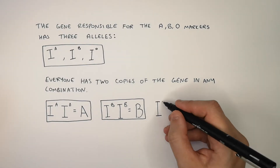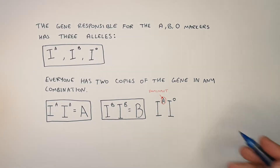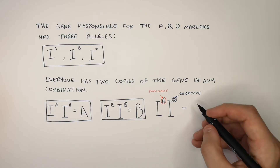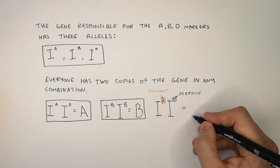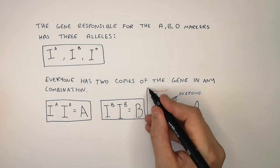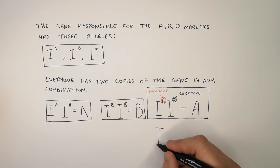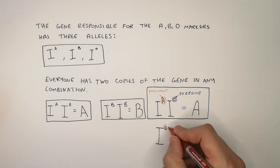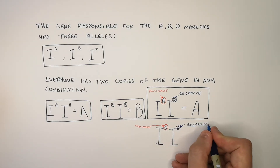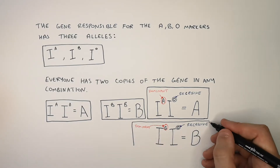If you have the alleles IA and IO, IA is the dominant allele whereas IO is the recessive allele. This means the dominant allele will be expressed instead of the recessive allele, giving you the phenotype blood group A. IA and IO are different alleles, so this person is heterozygous. Similarly, if you have the genotype IB, IO, the allele IB is dominant whereas IO is recessive, meaning you will have the phenotype blood group B — IB, IO are different alleles, so this person is also heterozygous.